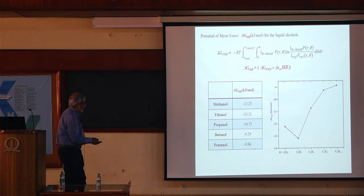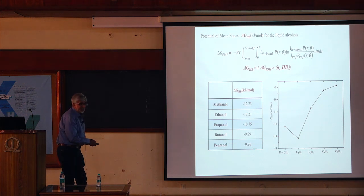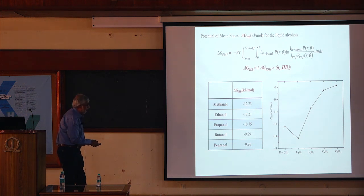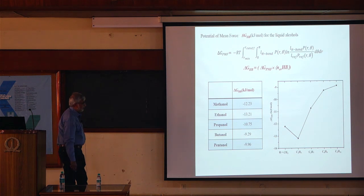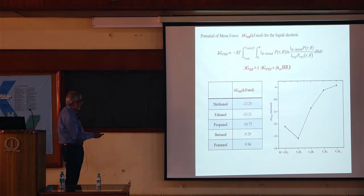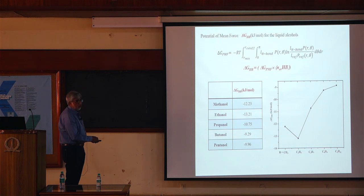We find that ΔG is lowest for ethanol — lower than for methanol — and steadily increases with alkyl chain length. This is the ΔG for hydrogen bond formation for the linear alcohols.